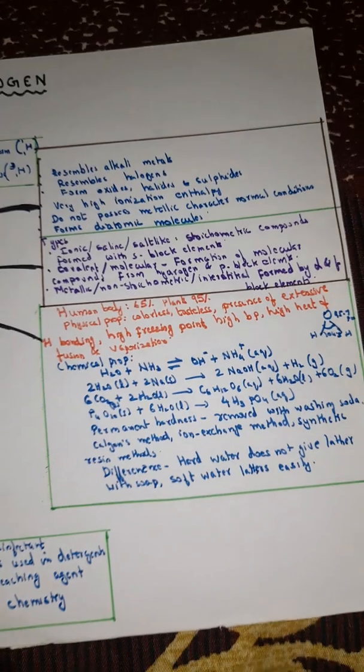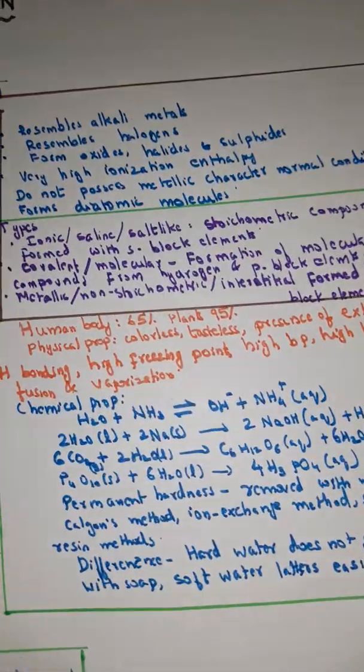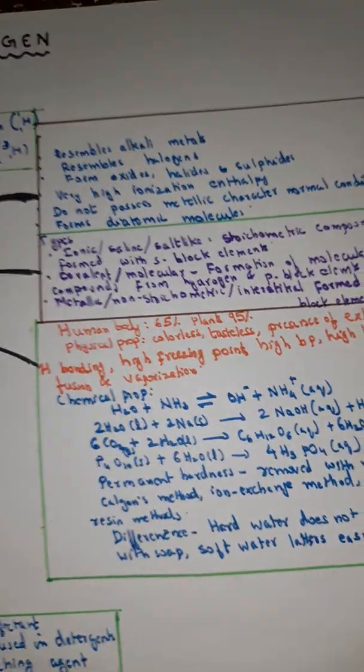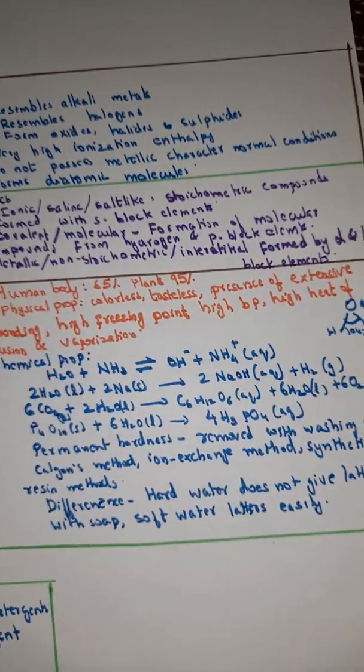Here you can see the electronic configuration 1s¹. Properties I've already shown you, and different types also we saw.